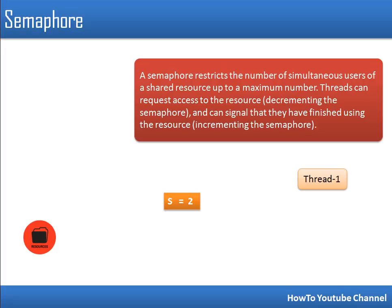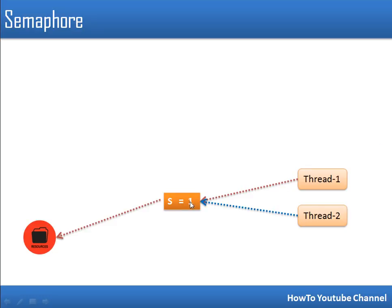There is no ownership relationship in semaphore — it is a signaling mechanism. In our example, the semaphore has a variable S with an initial value of 2, specifying how many threads can simultaneously access the resource. Whenever a thread tries to access a shared resource, it first decrements the semaphore value. After decrementing, if the value is less than zero, the thread must wait. The first thread decrements S to 1 — not less than zero — so access is allowed.